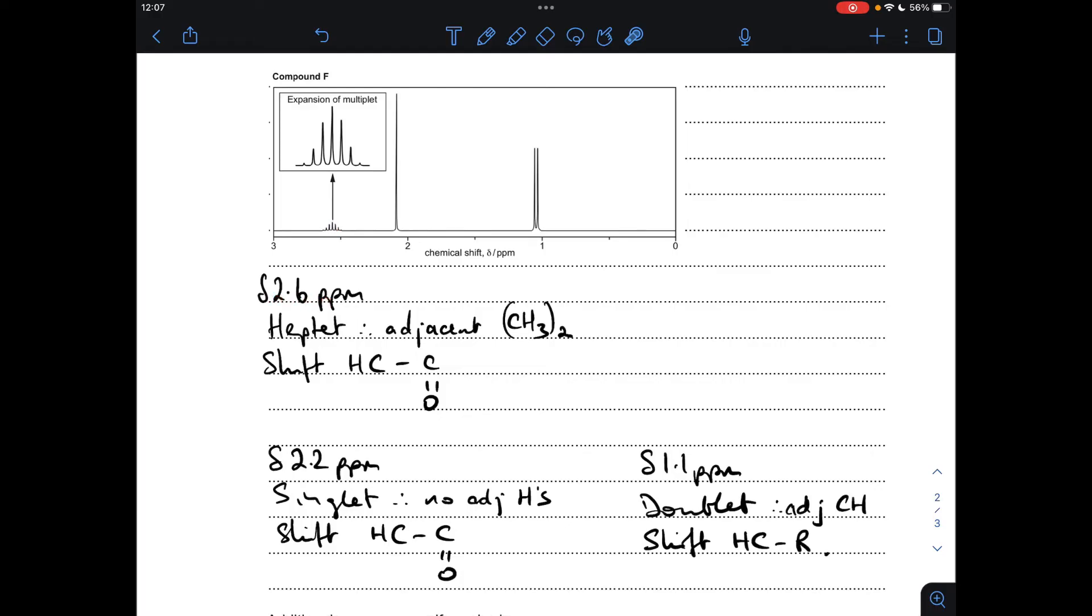So I'll just run through the information for each peak. So starting with this one here at roughly 2.6 ppm, that's a heptet. It's got seven lines in the signal, so that means there's six adjacent hydrogens that are equivalent to each other. So the structural feature there is two equivalent methyl groups, so (CH3)2 group, and the shift is H to C to C double bond O, which again is consistent with it being a ketone. Now, the fact that we've got a splitting pattern means we've got to have at least one other splitting pattern because they work in pairs. So the protons causing this signal are going to be adjacent to these.